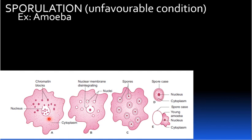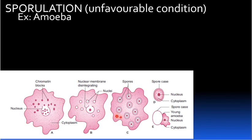In sporulation, the nucleus breaks into several small fragments called chromatin blobs. Each fragment develops a nuclear membrane and becomes surrounded by cytoplasm.